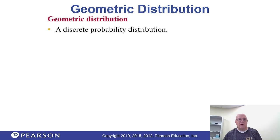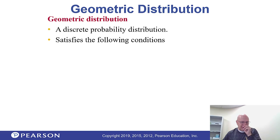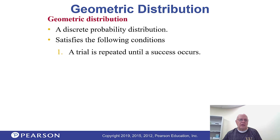First, the geometric one. It's a little bit easier than the other one. It's a discrete one — you come in chunks, so to speak. It has the following conditions: you keep doing something until you get a success.